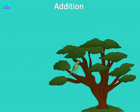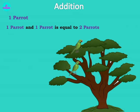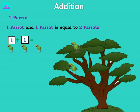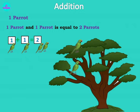Now how many birds are there on the tree? One parrot. So now children, how many parrots are there? One parrot. Now one more parrot flies in. So one parrot and one parrot is equal to two parrots. So how will we write this in numbers? One parrot plus one more parrot flies in, one equals two. One plus one is equals to two.